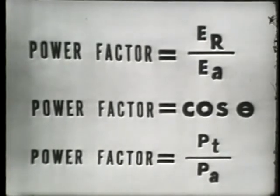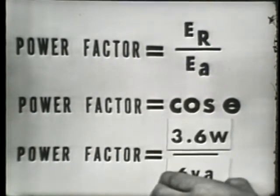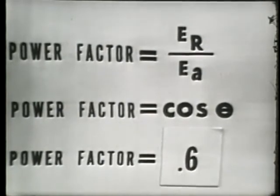Substituting these values into our formula, power factor equals true power of 3.6 watts divided by apparent power of 6 volt-amperes, which equals 0.6 — the same as the cosine of our phase angle. We've constructed vectors, used an oscilloscope, and used trigonometry to find power factor, total impedance, and phase angle for a series RL circuit. We must become knowledgeable of the simple circuit before we can possibly tackle the more complex circuit.